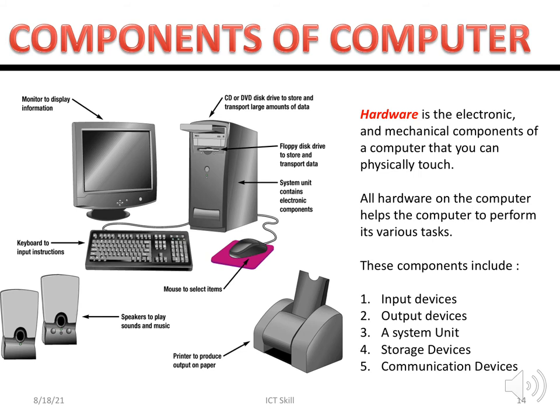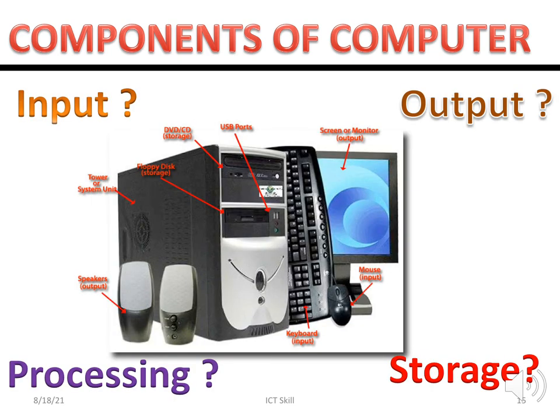Now we go to the components of a computer, which is hardware. Hardware refers to electronic and mechanical components that you can physically touch — for example, monitor, printer, keyboard, speaker, and scanner. We will discuss input, output, the system unit, storage devices, and communication devices.